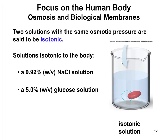Let's take a look at this in terms of blood cells. If you were to take a red blood cell, purify it from your plasma, and put it in what we refer to as an isotonic solution — an isotonic solution is going to be a solution that is equal to the body. Whenever I say equal to the body, it has the same osmotic pressure as the body.